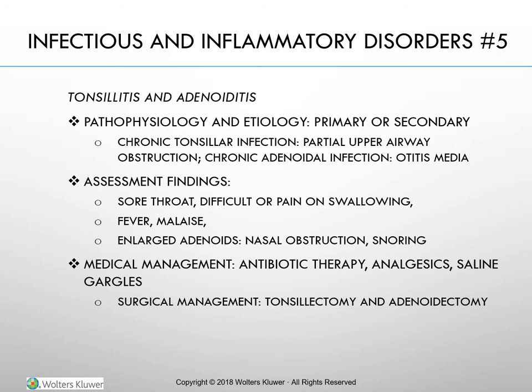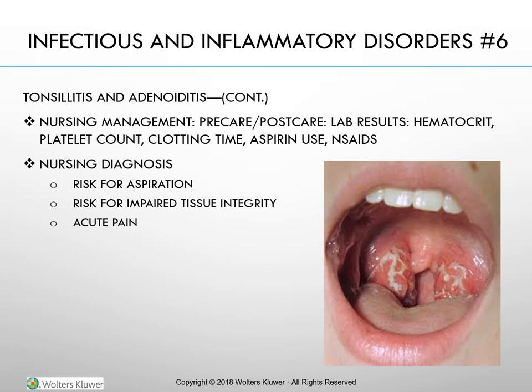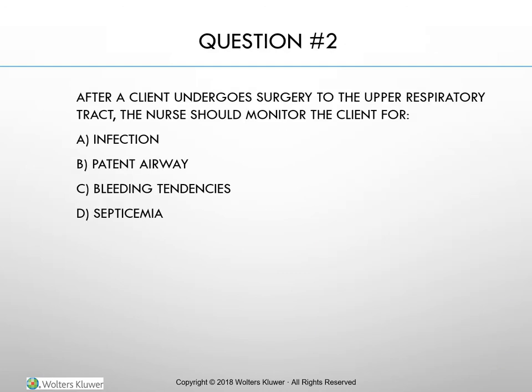Tonsillectomy and adenoidectomy are generally done as outpatient procedures. Recovery time is generally at least 10 days to two weeks or longer, especially for adults. Pre-care and post-care lab results include hematocrit, platelet count, clotting time, aspirin use, and other assessments. Nursing diagnoses include risk for aspiration, risk for impaired tissue integrity, and acute pain — all based on the post-operative surgical situation of removal of the tonsils and adenoids. Practice question: After a client undergoes surgery to the upper respiratory tract, the nurse should monitor the client for: A) Infection, B) Patent airway, C) Bleeding, or D) Septicemia. The answer is patent airway. The rationale is that the airway is always the primary assessment to be made after surgery.